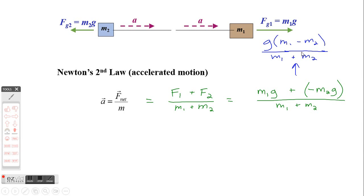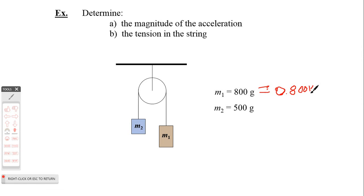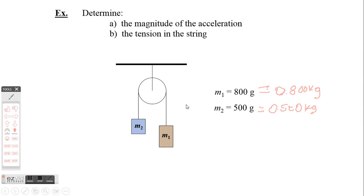Let's do one of these with actual numbers. m1 is 800 grams and m2 is 500 grams — remember we have to convert to kilograms, so 0.800 kilograms and 0.500 kilograms. We want to find the magnitude of the acceleration, and we still have to find the acceleration even if all we need is the tension.